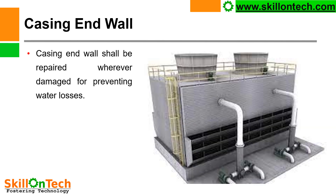Here you can see the end wall casing. This shall be intact with the cooling tower, but it can become damaged over a period of time. If the end casing wall is damaged, water can splash out into the atmosphere and water losses will increase. So the casing end wall shall be repaired wherever damaged to prevent water losses.